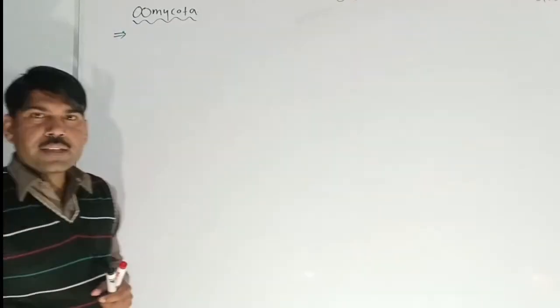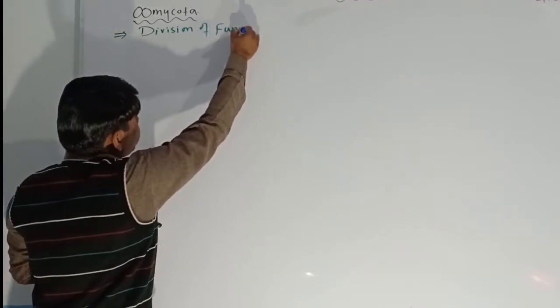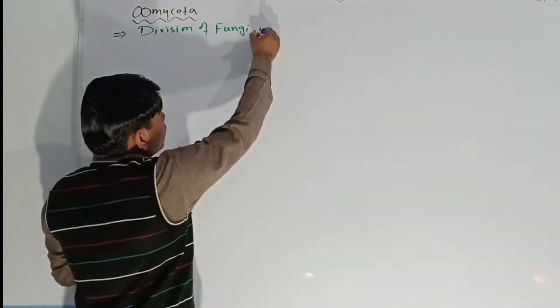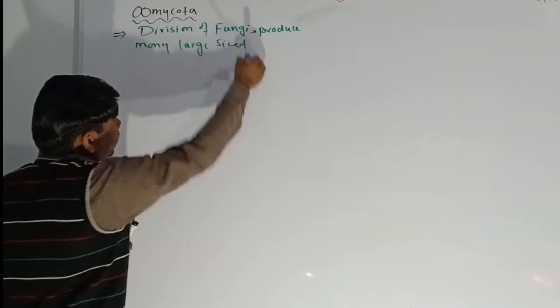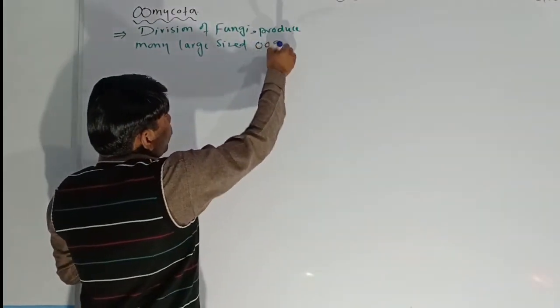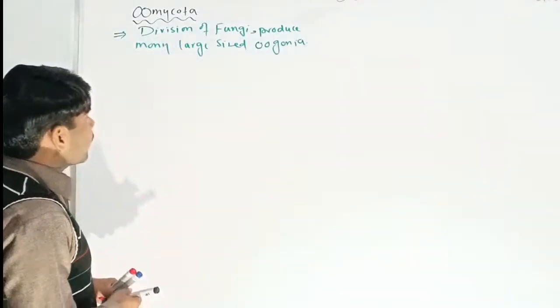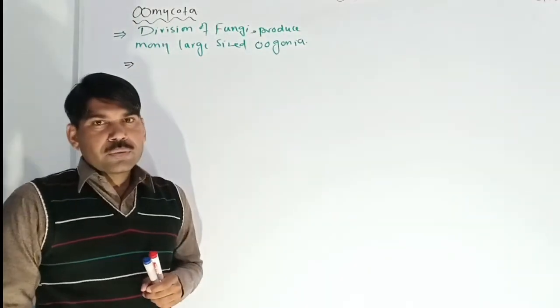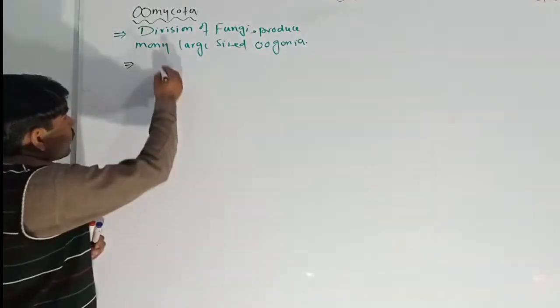Assalamu alaikum students, today we are going to discuss about the division Oomycota and the genus of this Oomycota, Pythium. Firstly, we will discuss the general characteristics and why it is known as Oomycota. It is a division of fungi and it produces large sized reproductive structures called oogonia. Due to the production of these oogonia, this division is named Oomycota.